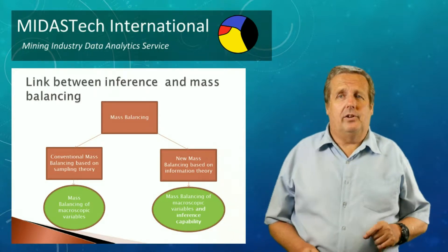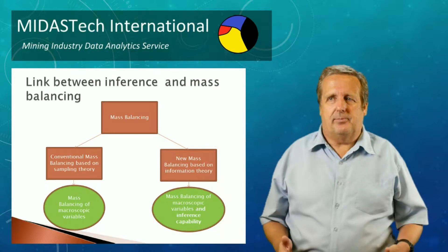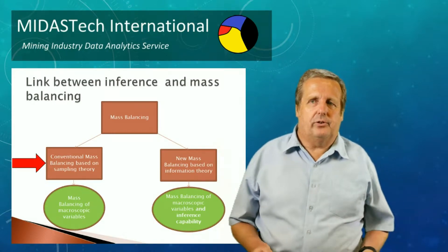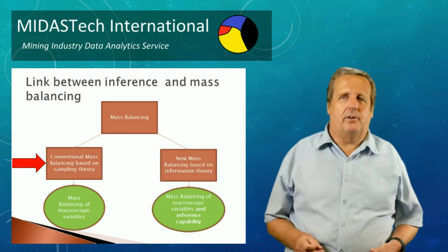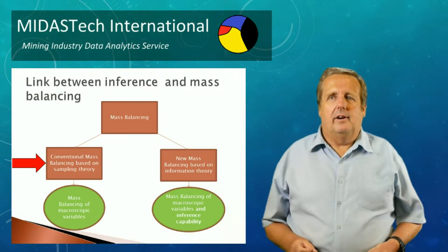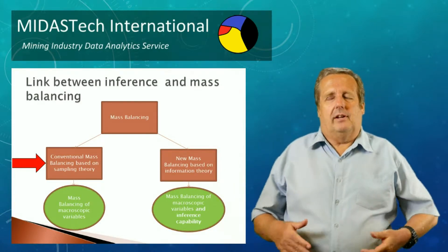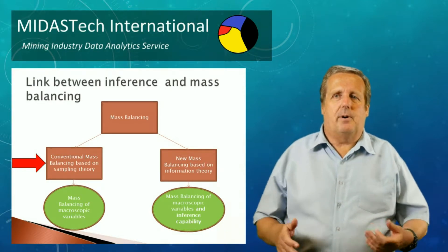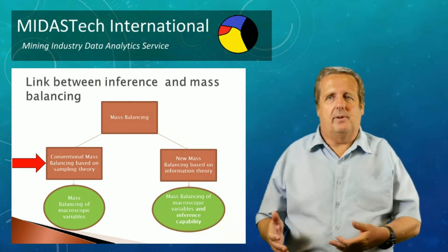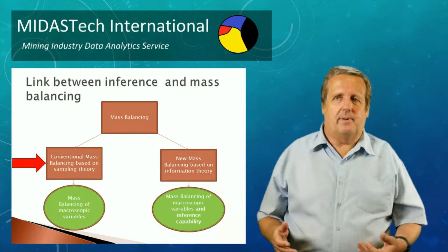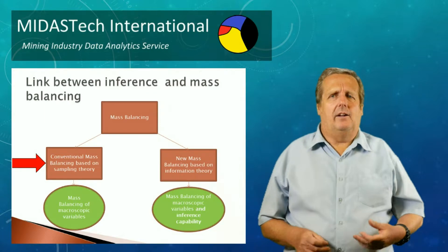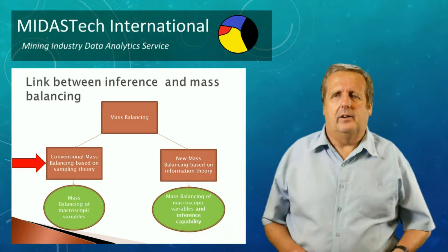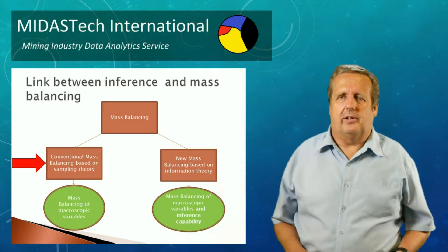It turns out that there are two ways of developing a mass balance system. The first, what I call conventional mass balancing, is what most mineral processors learn. Mass balancing — sometimes called multi-component mass balancing — is often used in mineral processing. Its primary purpose is to adjust measured values so that there is mass balance consistency, and to use deductive inference to estimate missing values, for example to estimate solid flow rates if you know the percent solids.